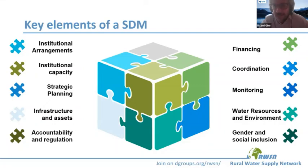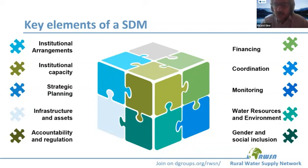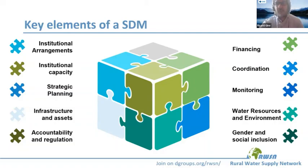We also need to strengthen monitoring of the sector. It is difficult to assess performance of specific service delivery modalities, so monitoring must be improved. We need to link water and sanitation services with the broader water sector, ensuring water resources and the environment are used correctly. Finally, gender and social inclusion must be considered, recognizing that different end users may have different needs in relation to services — and we need to factor this into the definition of the right modalities.